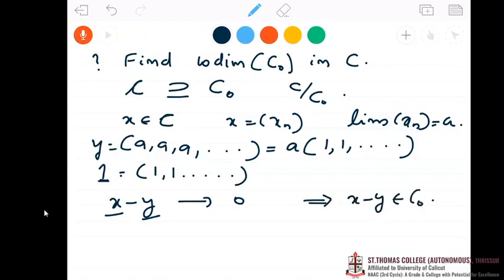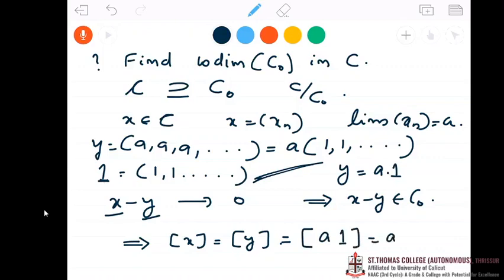If x minus y is in c naught, we know that class of x is same as class of y. Now this class of y, I can write y as a times big one. So this is class of a times 1, which is a times class of 1. So you take any class x, if you take any x from c, class x can be written as a scalar multiple of class 1.